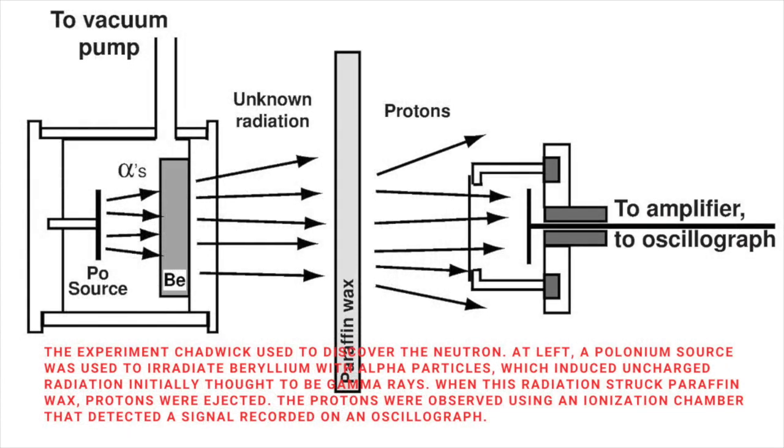James Chadwick at the Cavendish Laboratory in Cambridge reported to Rutherford on the Joliot-Curie's results and then repeated their experiments. He not only bombarded the hydrogen atoms in paraffin with the beryllium emissions, but he also used helium, nitrogen and other elements as targets. By comparing the energies of recoiling charged particles from different targets, he proved that the beryllium emissions contained a neutral component with a mass approximately equal to that of the proton.